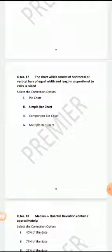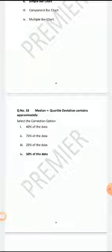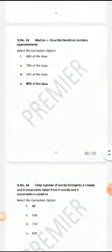The chart which consists of horizontal or vertical bars of equal width and length proportional to values is called simple bar chart. Mean plus minus quartile deviation contains 50% of data. Median plus minus quartile deviation contains 50% of data.